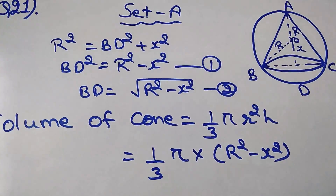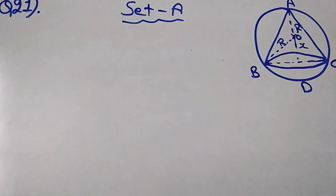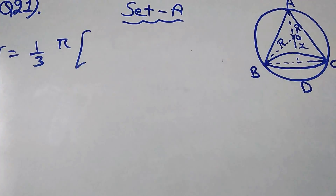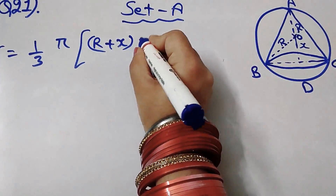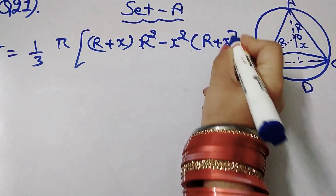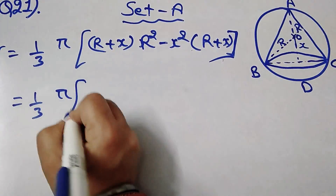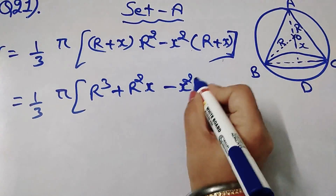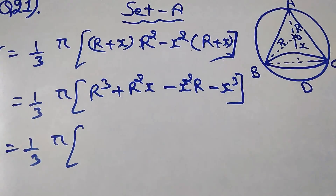The height of the cone is R plus x. Expanding, the volume V equals (1/3)π times (R squared minus x squared) times (R plus x), which gives (1/3)π times (R cubed + R squared·x − x squared·R − x cubed).